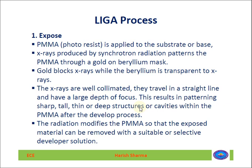In the expose step, a PMMA photoresist is applied to the substrate. Synchrotron X-ray radiation patterns the PMMA through a gold-on-beryllium mask. Instead of UV rays, X-rays are used here. The mask is made of beryllium with gold features: gold blocks the X-rays while beryllium is transparent to X-rays, which is why this gold-on-beryllium mask is used.